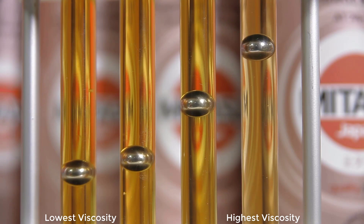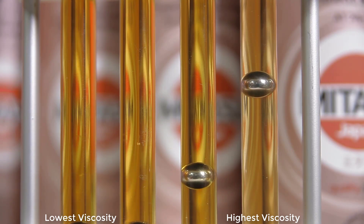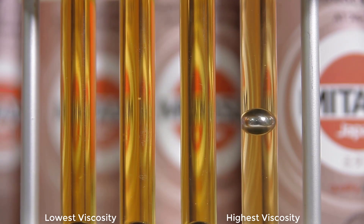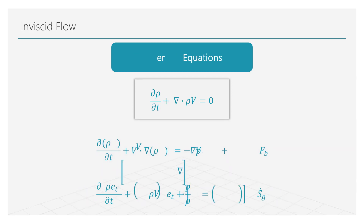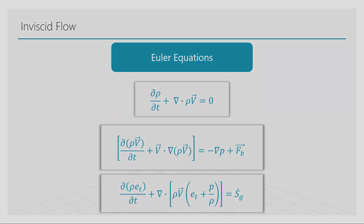Viscosity is the measure of the friction between the different layers of fluid that are in relative motion. Most external fluid flow problems can be considered inviscid in regions away from the object. From a mathematical standpoint, the inviscid assumption implies that the molecular viscosity of the fluid can be neglected. With that simplification, the classical Navier-Stokes equations transform into the inviscid equations, referred to as the Euler equations, named after Leonard Euler who discovered them.